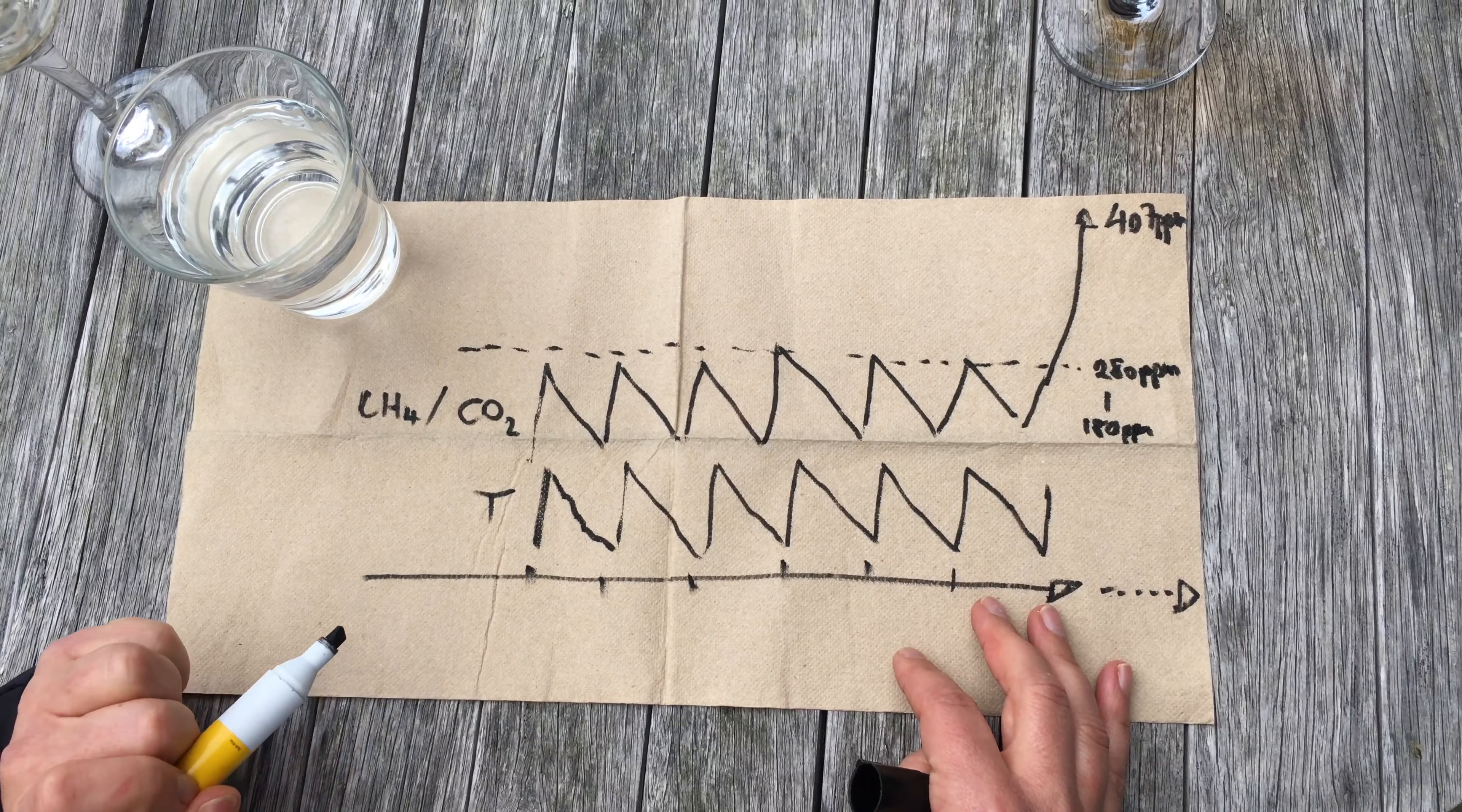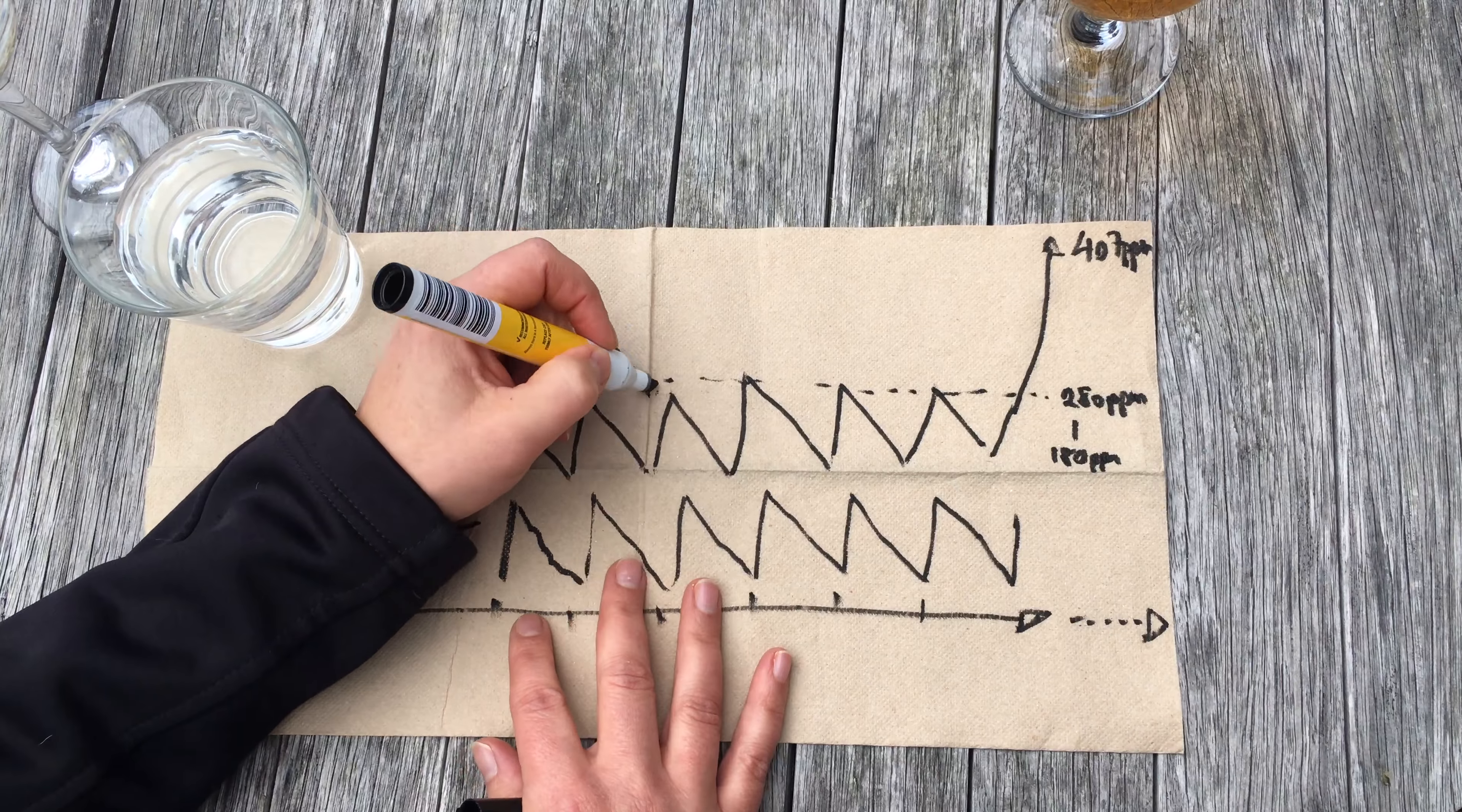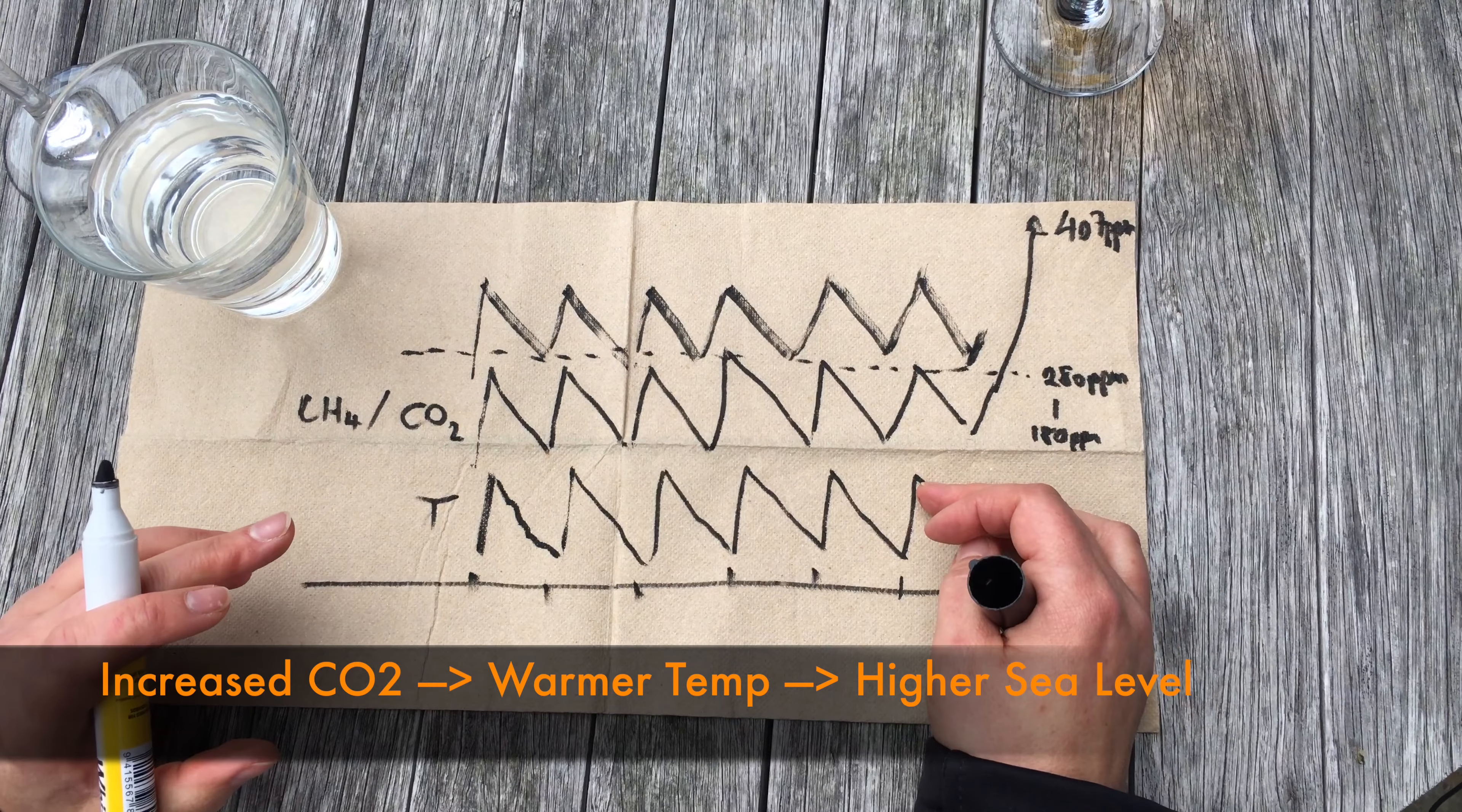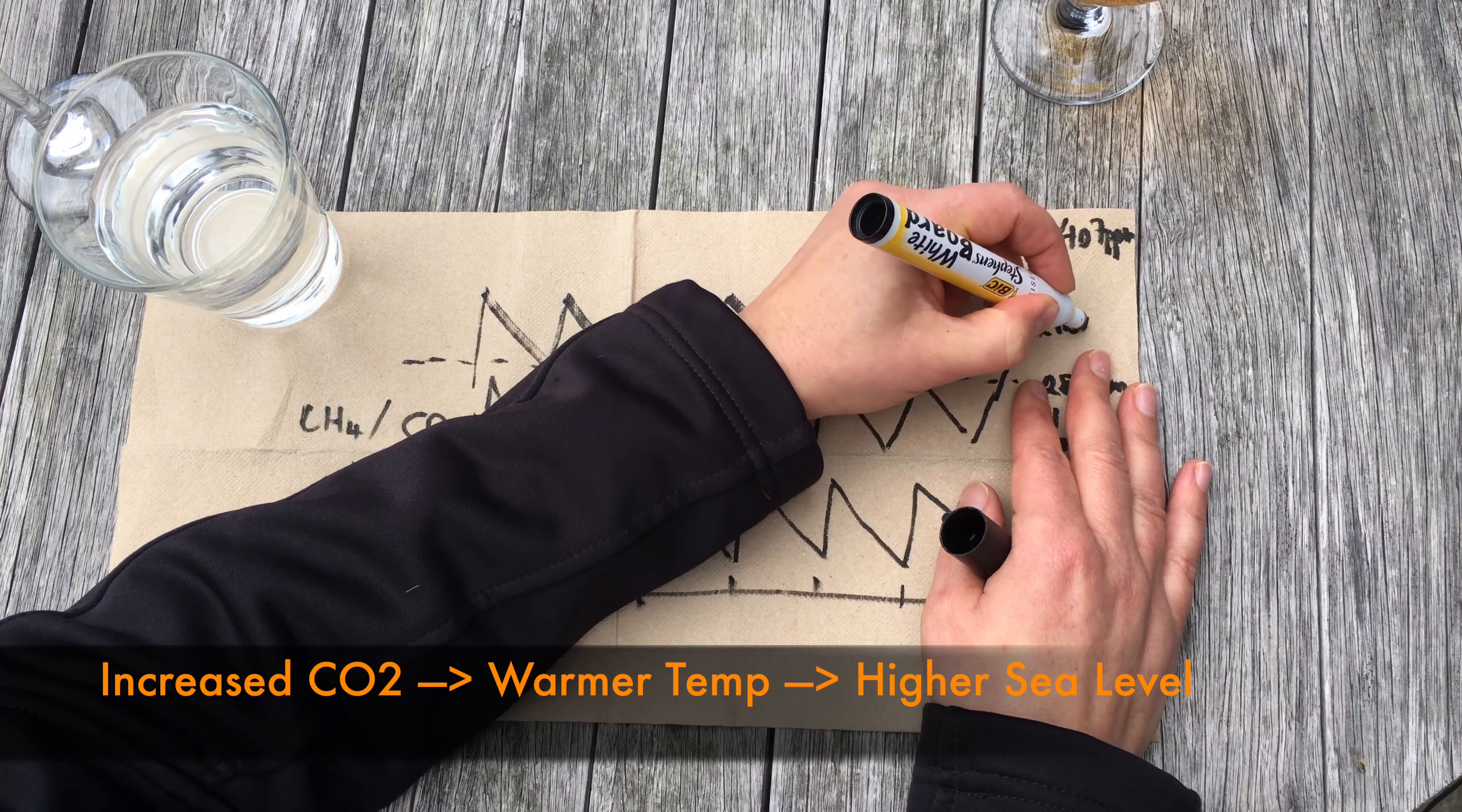But what we can do in addition is now look at things like sea level. What we can see when we look at sea level is again that we have that same seesaw structure. So this tool tells us that if CO2 increases, it becomes warmer, the ice sheets melt, and the ocean rises. We can have over 100 meters of sea level change.